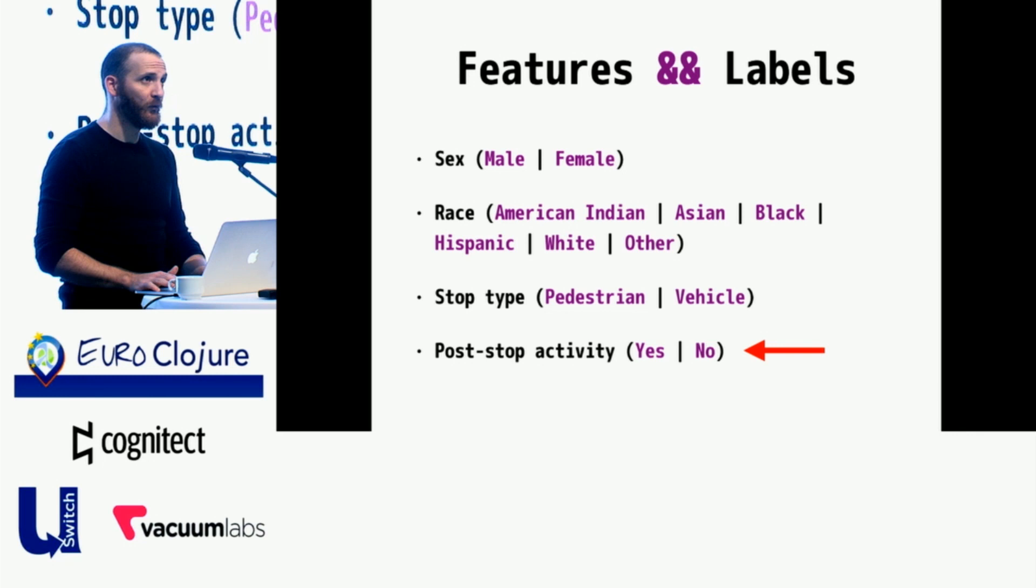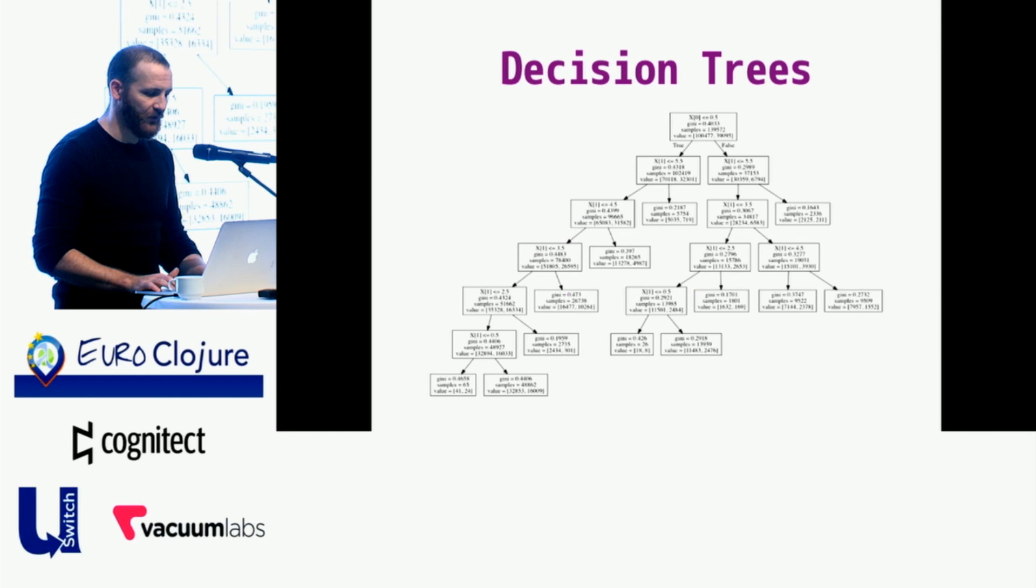So given that we have this data in this shape, how are we going to do this machine learning magic? I decided that a decision tree would be a good place to start. I picked decision trees because they're fast, relatively speaking, as opposed to something like a support vector machine, which can be very computationally expensive. They're robust to noise, meaning that if there's missing or mislabeled data, the tree will generally still work, still have predictive power. Although these data are fairly clean. Decision trees are also good for binary and disjunctive input: are they male or female? Is it a vehicle or is it a pedestrian?